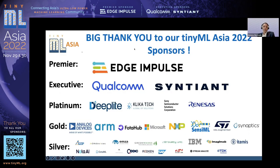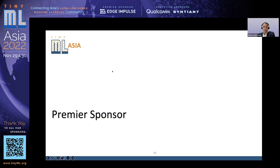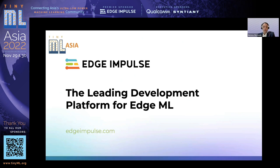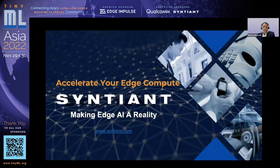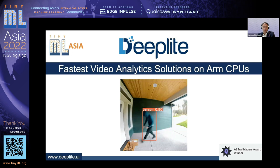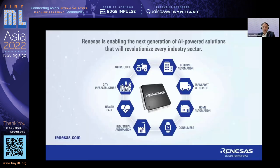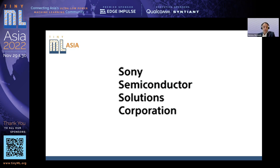A final thank you to our sponsors. Once again, thank you to Edge Impulse as the premier sponsor — a great solution for those who want a simple approach to development on TinyML devices. Executive sponsors include Qualcomm AI Research, a great organization with chips in most platforms around the world, and Syntiant, making Edge AI a reality. Platinum sponsors: Deep Light for fastest video analytics on CPUs, Clicker Tech for global IT solutions, Renesas enabling next-generation AI-powered solutions, and Sony Semiconductor Corporation. Gold sponsors include Analog Devices, PhotoHub for over-the-air firmware updates, Microsoft providing Edge computing and Azure integration for IoT and TinyML solutions, and NXP as a hardware provider integrating with TinyML solutions.